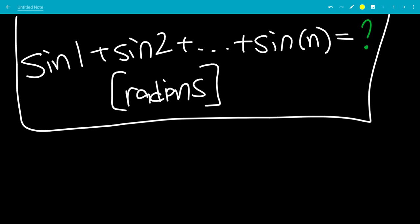In this video, we're going to find the value of sine 1 plus sine 2 plus sine 3 plus dot dot dot plus sine of n. All these angles are in radians, not degrees.